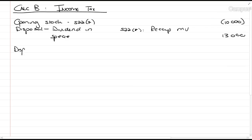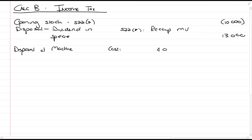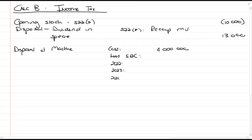Then we have a disposal of the machine. The cost of the machine, they tell you the machine had a cost of 4 million on the 1st of January 2022. So, there is section 12c, 2022, 2023, yes, and 2024.